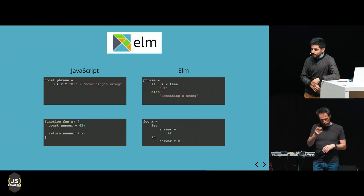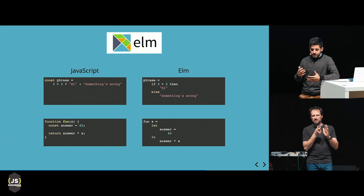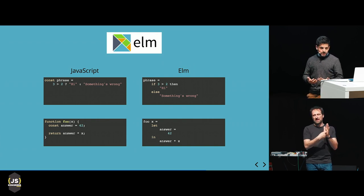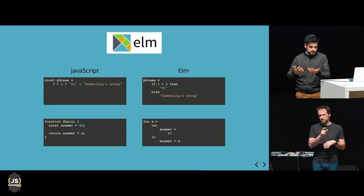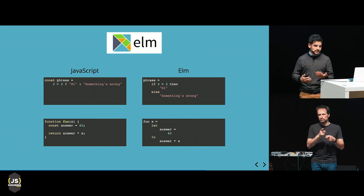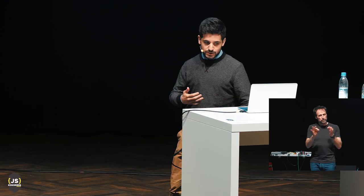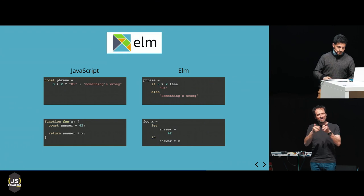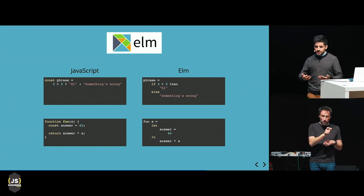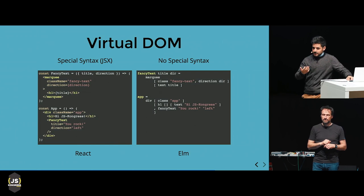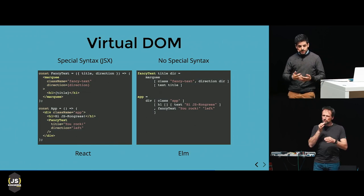To get a bit familiar with the syntax, here's how you define an if expression in Elm. Everything is an expression in Elm, meaning everything has to evaluate to some value. So an if expression always has to have an else branch — it's more similar to the ternary operator in JavaScript than an if statement. For functions, there's no function keyword, and arguments are separated by spaces both for calling and defining. Elm is specifically built for writing single-page applications.